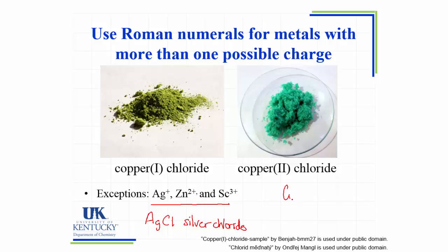Copper can be +1 or +2, so compounds CuCl and CuCl2 require a Roman numeral in the name to indicate the charge on the metal ion: copper(I) chloride and copper(II) chloride. Note these are Roman numerals — use I, not the number 1. There is no space between the element name and the opening parenthesis, no spaces inside the parentheses, but there is a space after the closing parenthesis before the anion name. We never include a Roman numeral for main group elements, silver, zinc, or scandium.